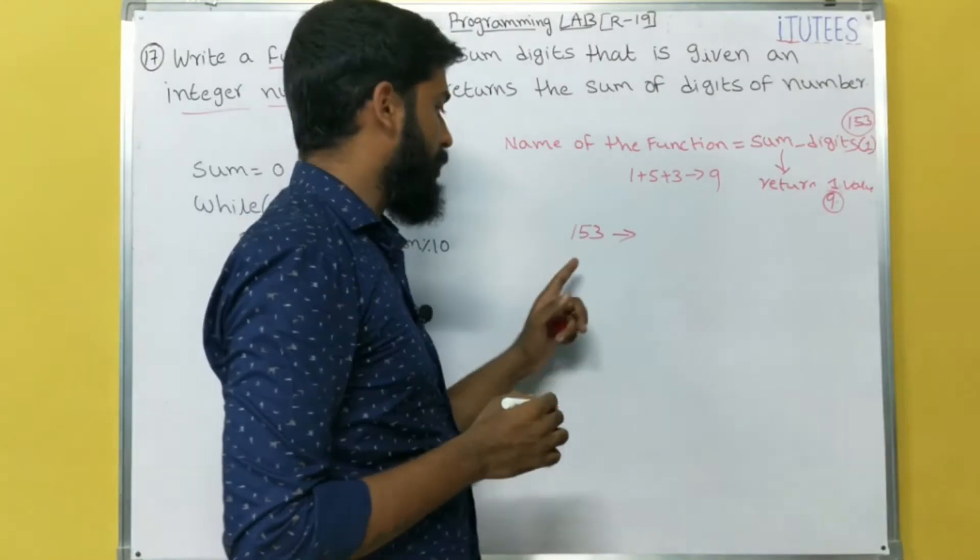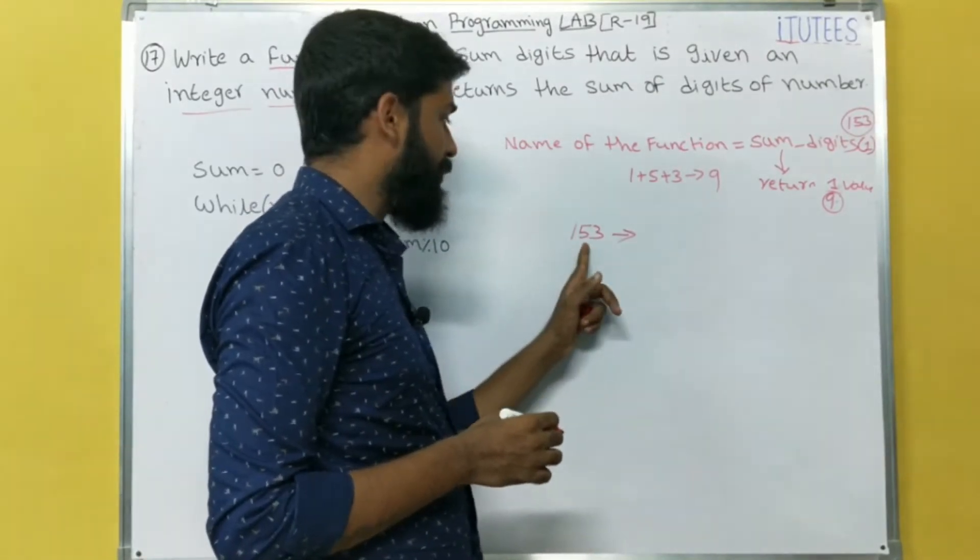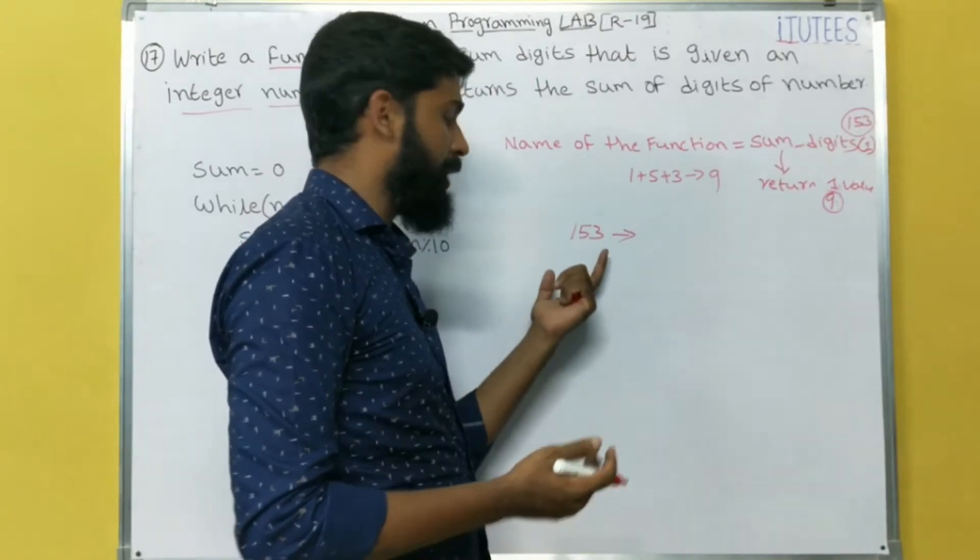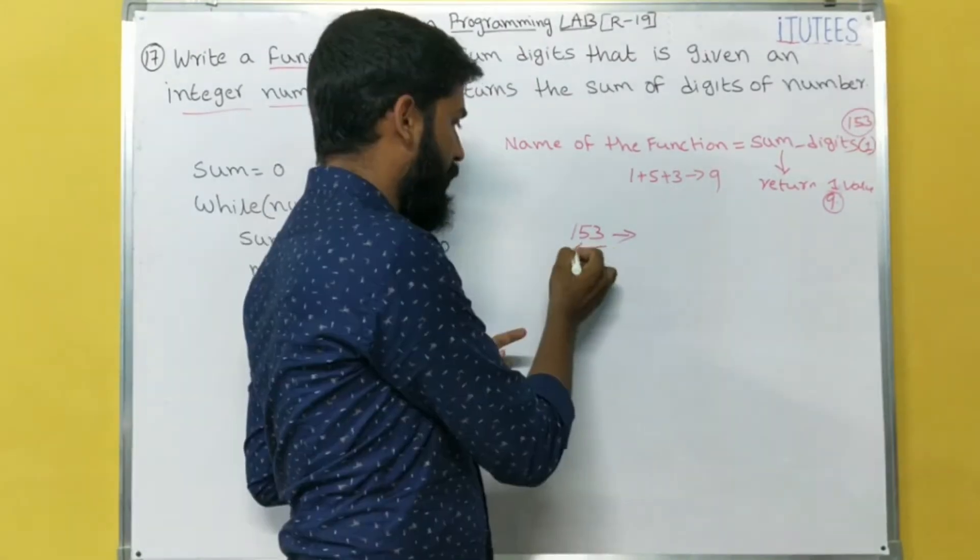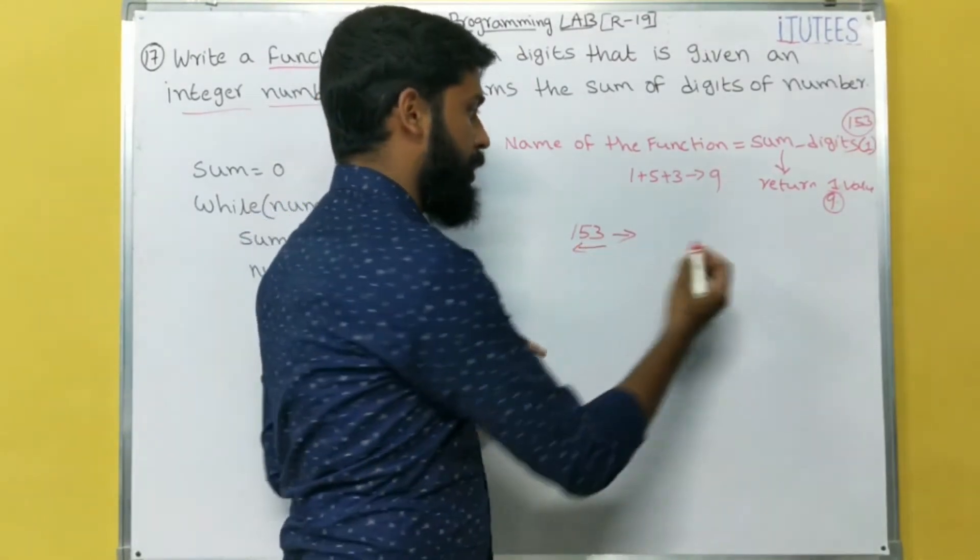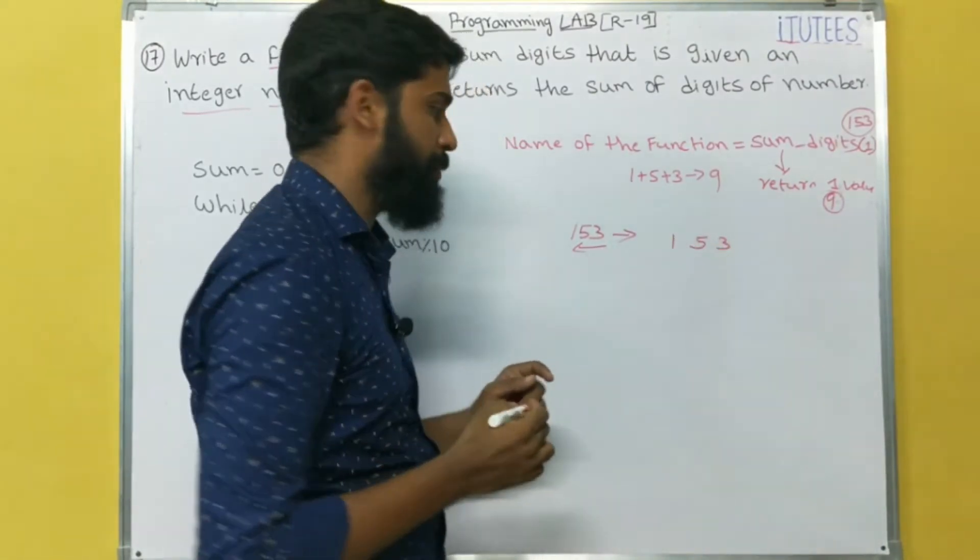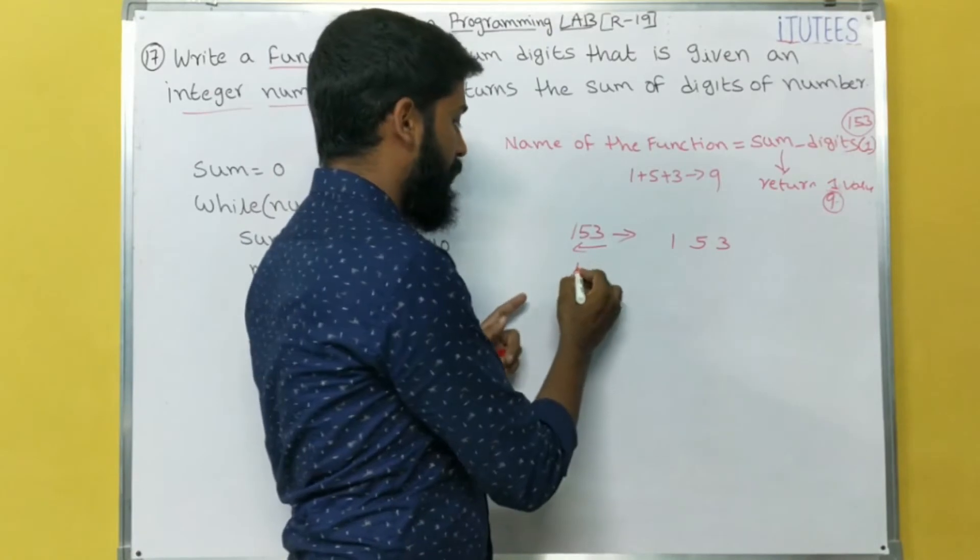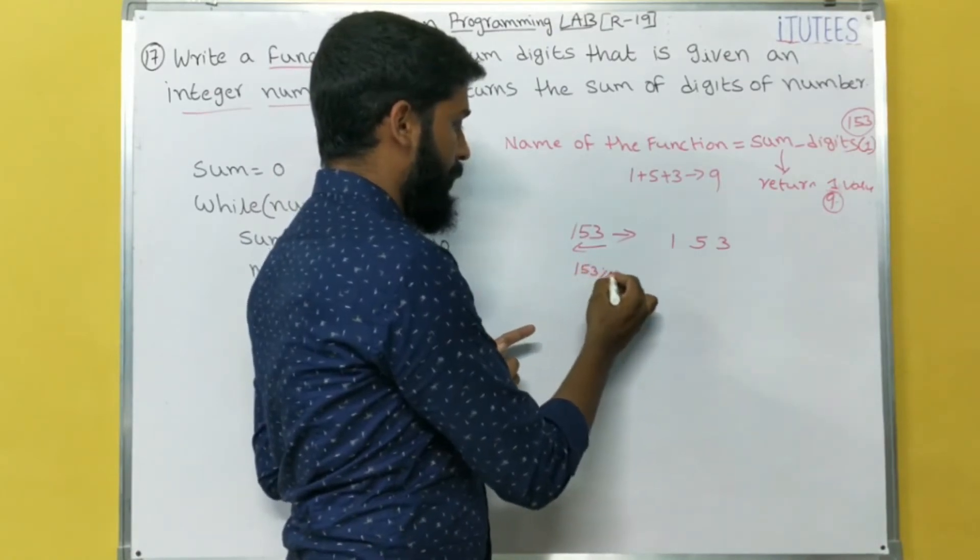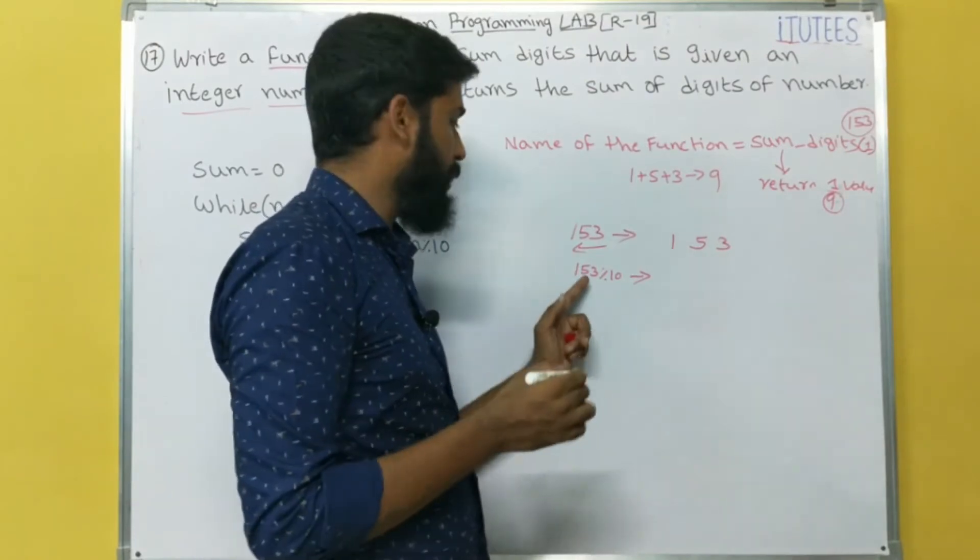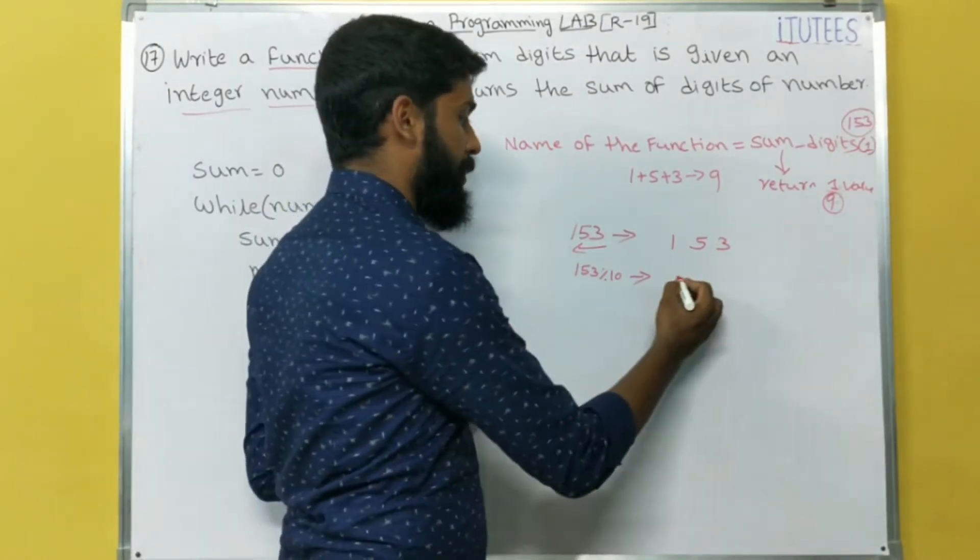For 153, so what are the digits? 1, 5, 3. But in programming language, we can find the digits from backward. So what are the digits? In our view, 3, 5, 1. So that means, how we can know? 153 percentage 10. So that means, what is the remainder? 153 percentage 10 means we get the remainder 3.